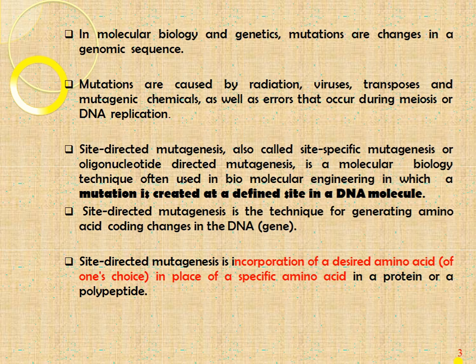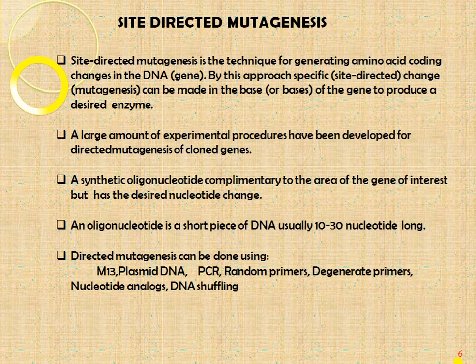Site-directed mutagenesis is a technique for generating amino acid coding changes in a DNA gene. It involves the incorporation of a desired amino acid of one's choice in place of a specific amino acid in a protein or polypeptide. Purposefully, you create mutation within the nucleotide sequence or DNA structure — you can replace one amino acid with another for a specific purpose, making specific changes in the base of a gene to produce desired results.